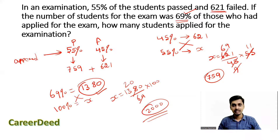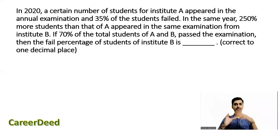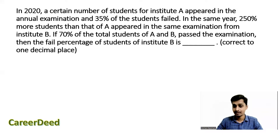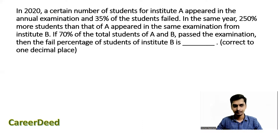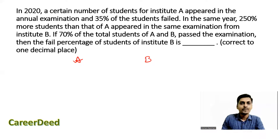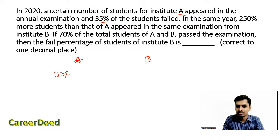Question 5: In 2020, a certain number of students from Institute A appeared in the annual examination and 35% failed. In the same year, 250% more students than Institute A appeared from Institute B. If 70% of the total students from A and B passed, find the failed percentage of Institute B correct to one decimal place. We assume 1000 students appeared from Institute A.